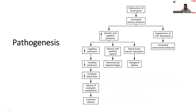Regarding pathogenesis: obstruction of dural sinuses leads to increased venous pressure, which causes increased venular and capillary pressure. This results in decreased capillary perfusion, decreased cerebral perfusion, and decreased cerebral blood flow. There is failure of energetic metabolism, leading to cytotoxic edema. Additionally, increased venular and capillary pressure leads to venous and capillary rupture causing parenchymal hemorrhage, and disruption of the blood-brain barrier leading to vasogenic edema. The increased venous pressure also causes impairment of cerebrospinal fluid absorption, leading to increased intracranial pressure. Through all these mechanisms, CSVT is formed.